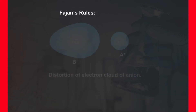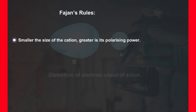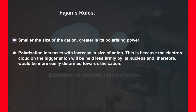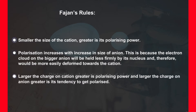The tendency of a cation to polarize and polarizability of an anion are summarized as Fajan's rules. Smaller the size of the cation, greater is its polarizing power. Polarization increases with increase in size of anion, because the electron cloud of the bigger anion is held less firmly by its nucleus and would be more easily deformed towards the cation. Larger the charge on cation, greater is its polarizing power; and larger the charge on anion, greater is its tendency to get polarized.